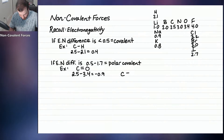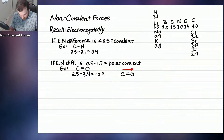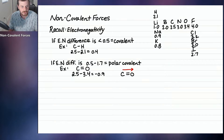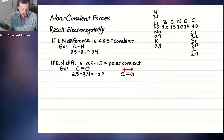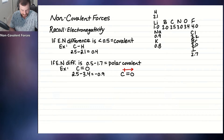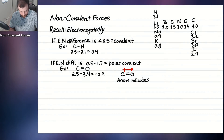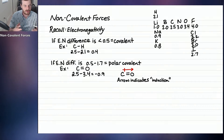We can draw what this looks like using a dipole arrow, which points in a polar covalent bond toward the more electronegative atom — in this case, oxygen. The arrow has a little line through it so it doesn't get confused with other arrow types like the resonance arrow. It also has a little plus sign on the other side to show the carbon is more electropositive. This arrow indicates what's called induction — the uneven sharing of electron density.